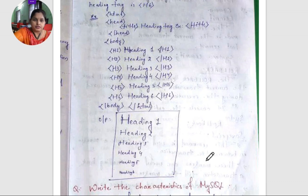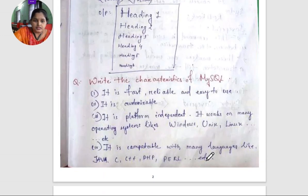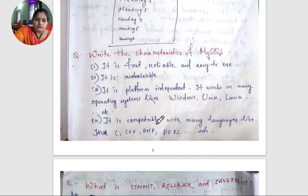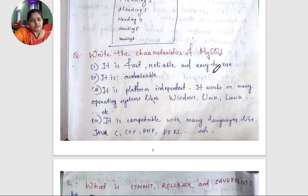Next, write the characteristics of MySQL. First, it is fast, reliable and easy to use. MySQL can access data, retrieve data, and manipulate data quickly. Also, MySQL software is customizable — you can change the core code.